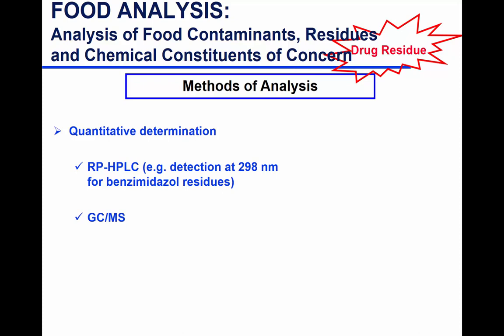Another quantitative determination is with reverse-phase HPLC, which is a common one, and you can also do GC-MS as well. These are common methods of detection. For the UV detection wavelength, you don't have to remember it — it's just UV detection basically.